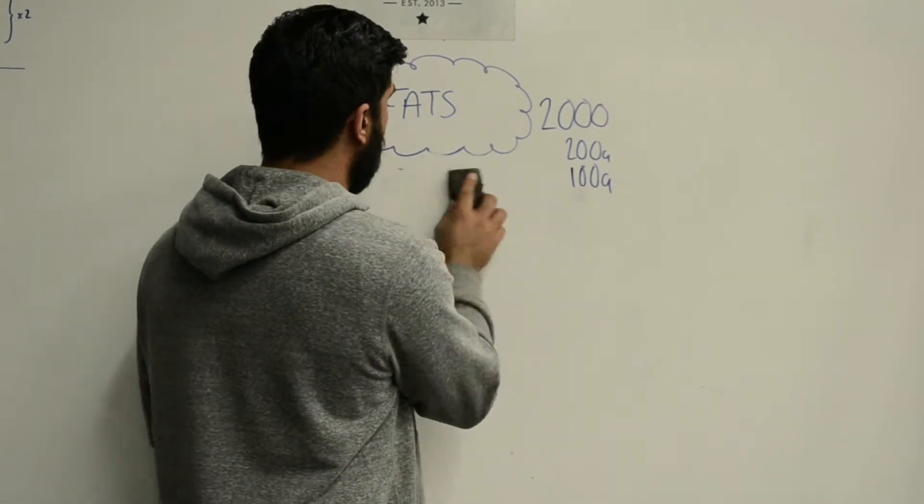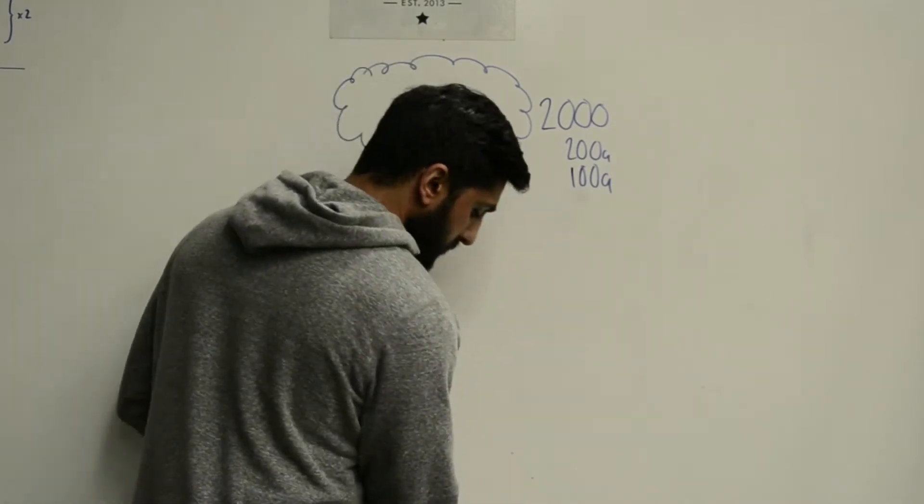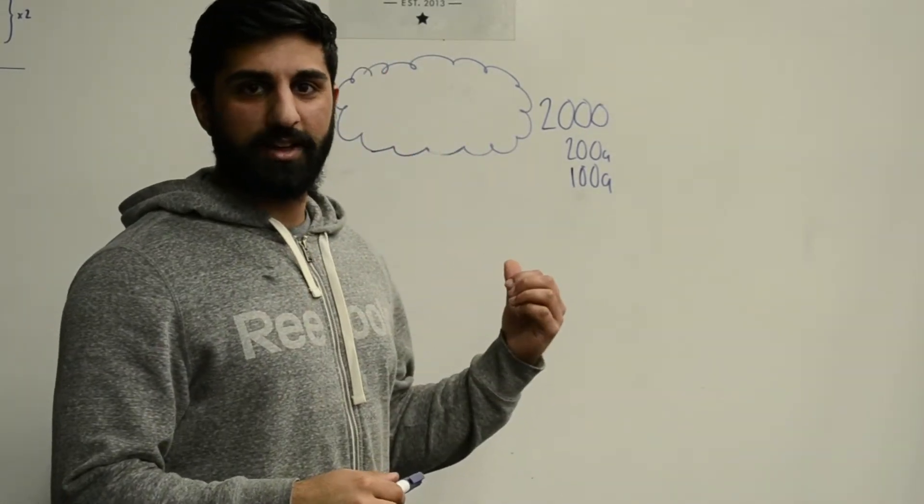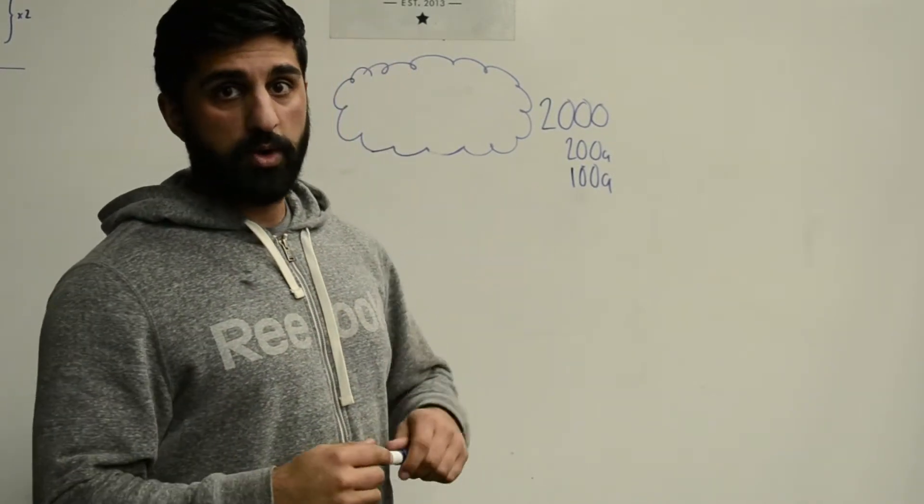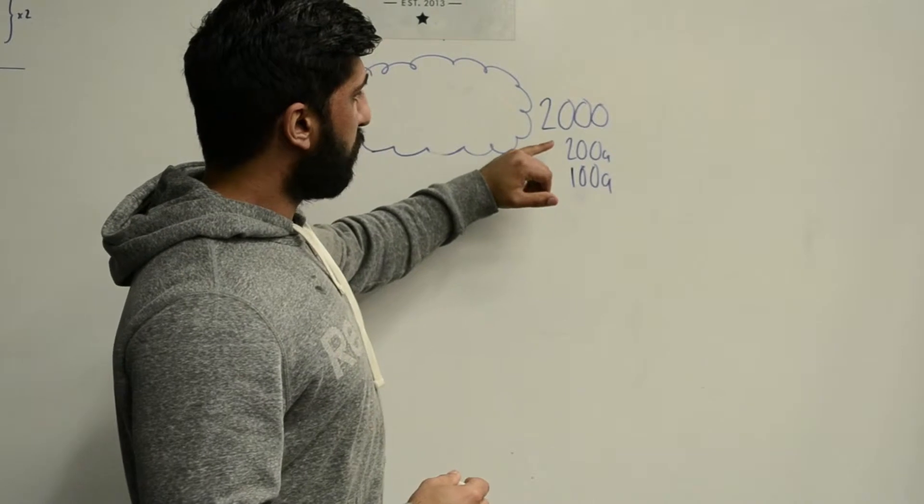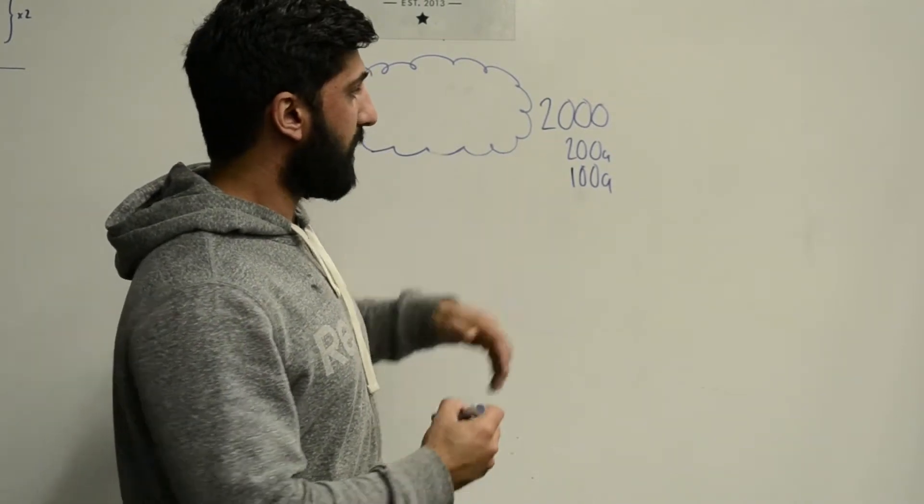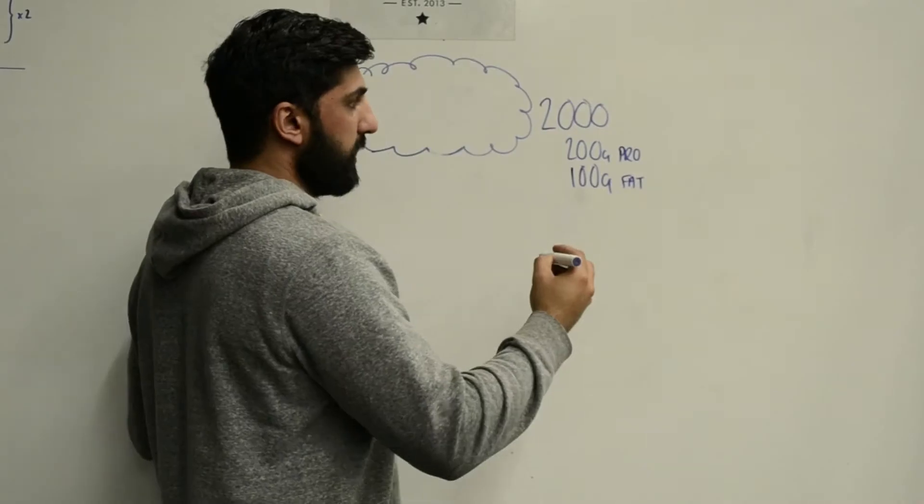Let's figure out our carbohydrates. This is where you need a calculator. The way you work out your carbs is to first work out how many calories you're getting from 200 grams of protein and 100 grams of fat.